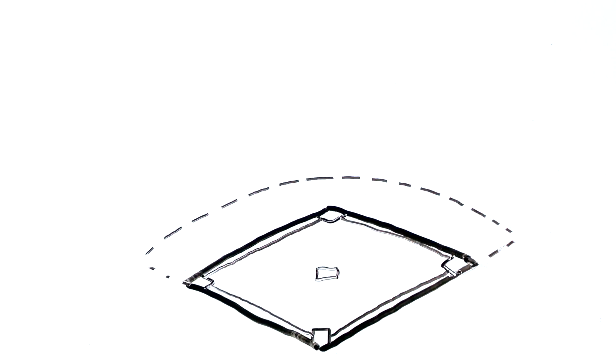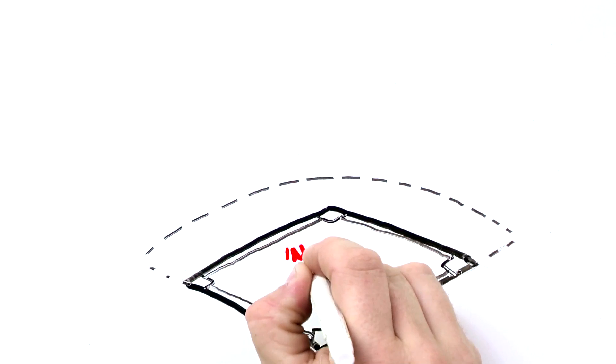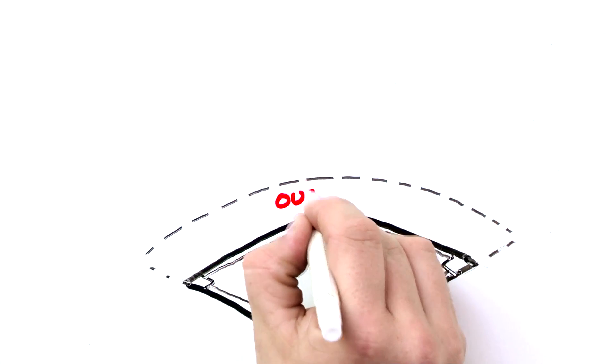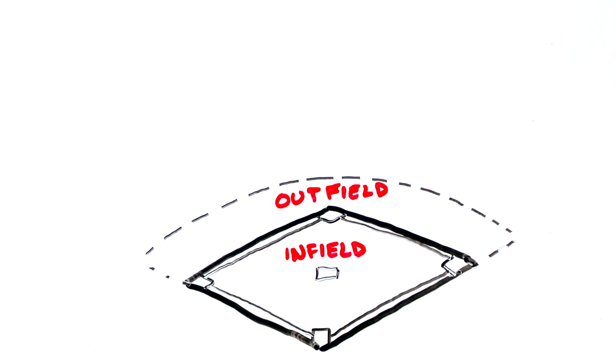The part of the field closest to the bases inside the diamond is called the infield, and the grassy farther reaches is the outfield. The distance between each base is about 90 feet, the distance that an offensive player must run in order to reach the next base.